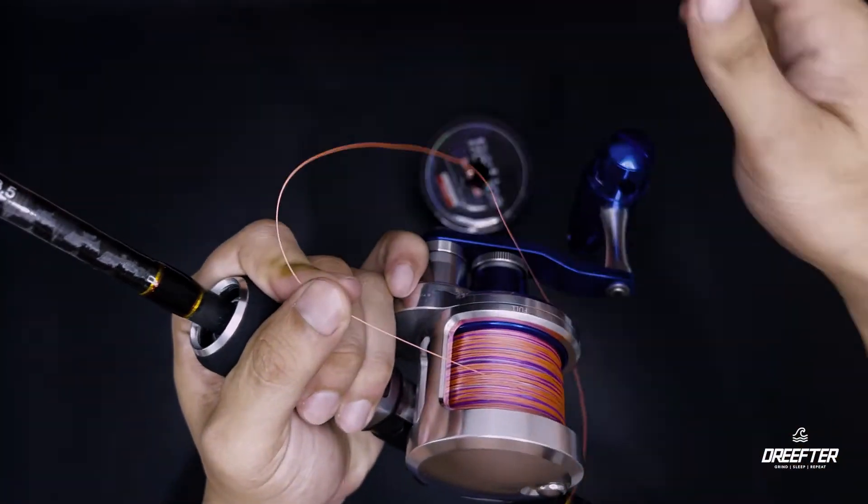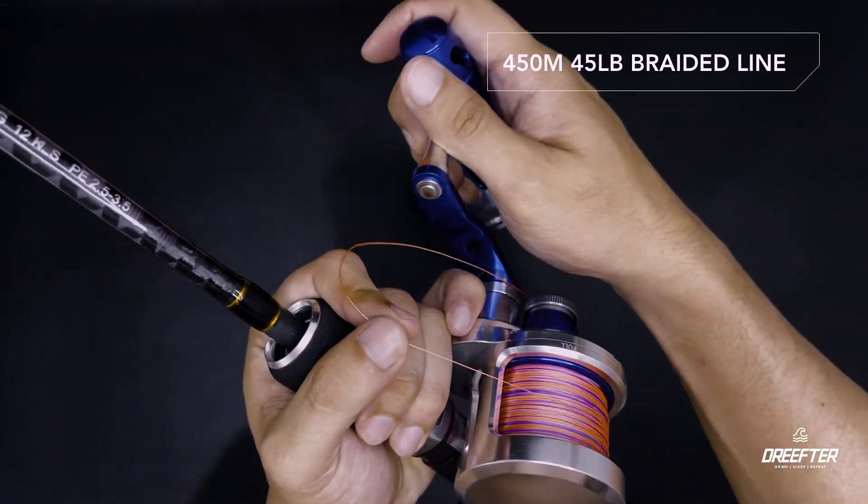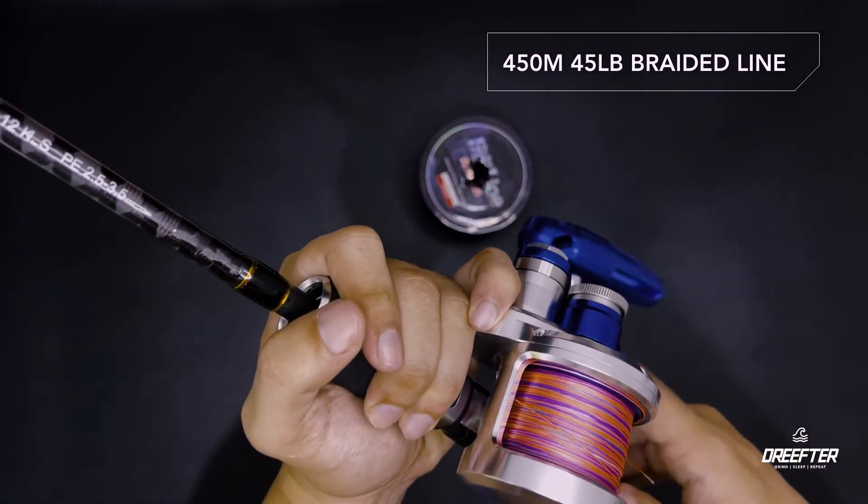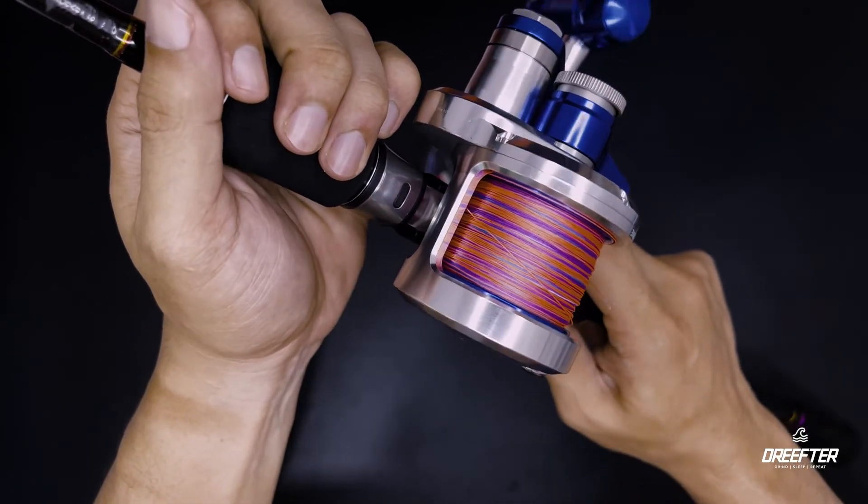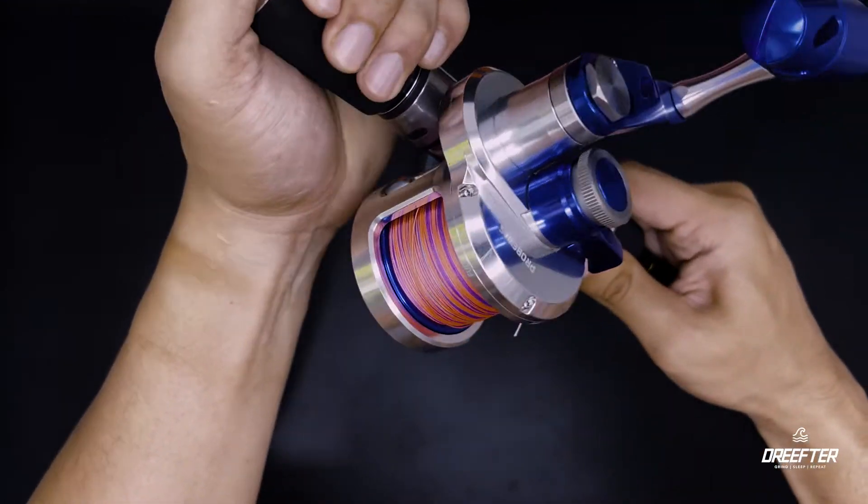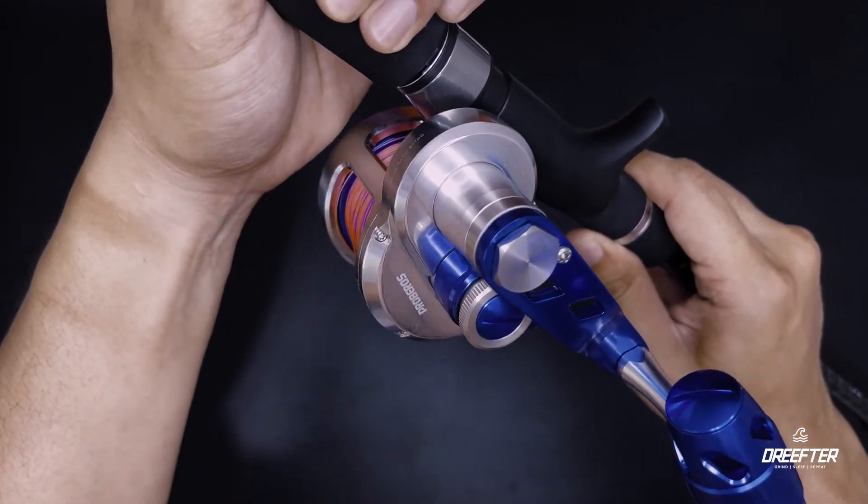So ito na guys, tapos na. So I was able to spool 450 meters of the braid line, so sulit na sulit. And I made sure na we have enough room para sa ating leader line. So ikabit na natin yung braid line natin sa ating leader line.